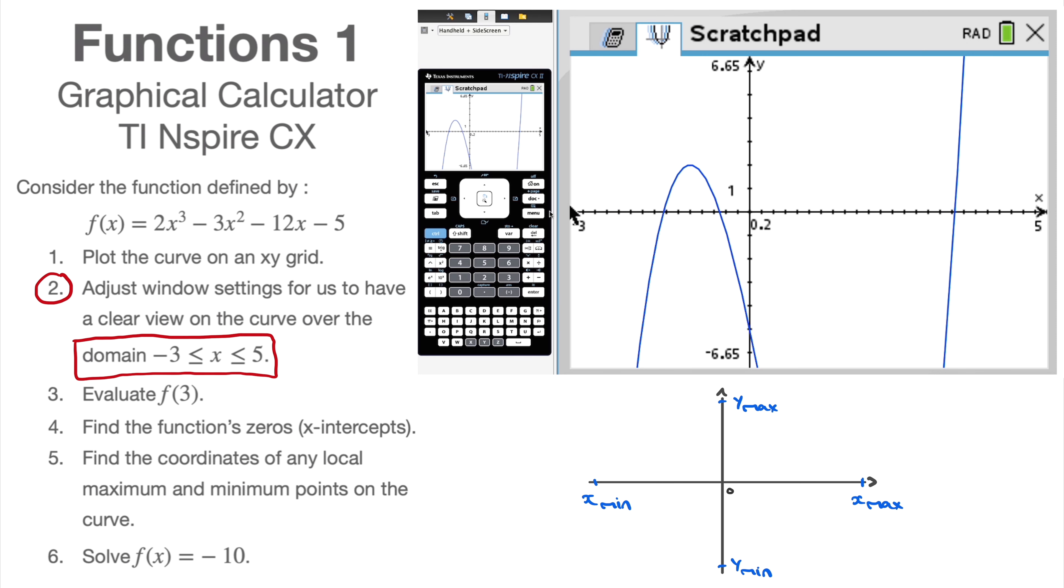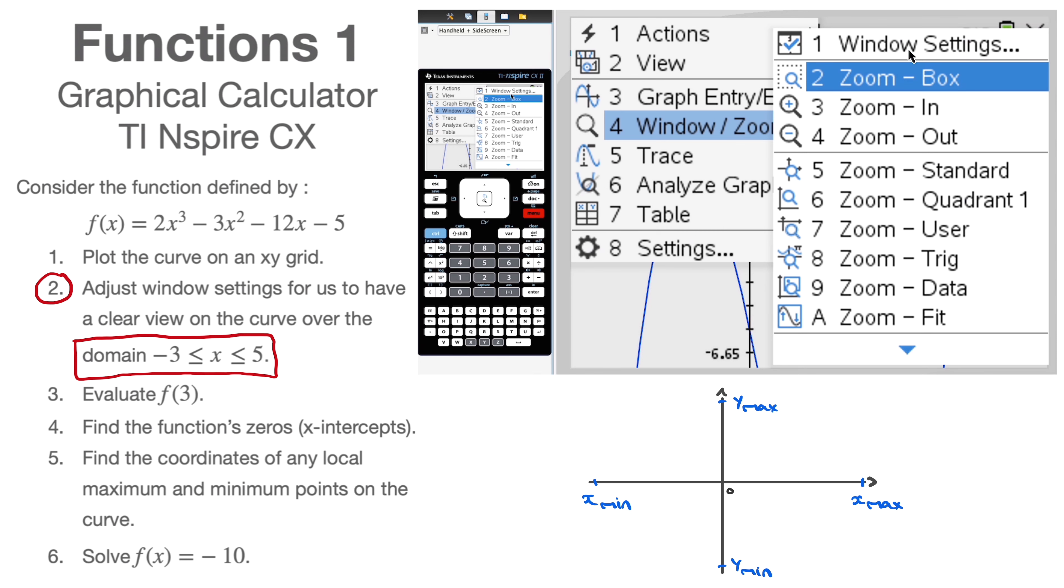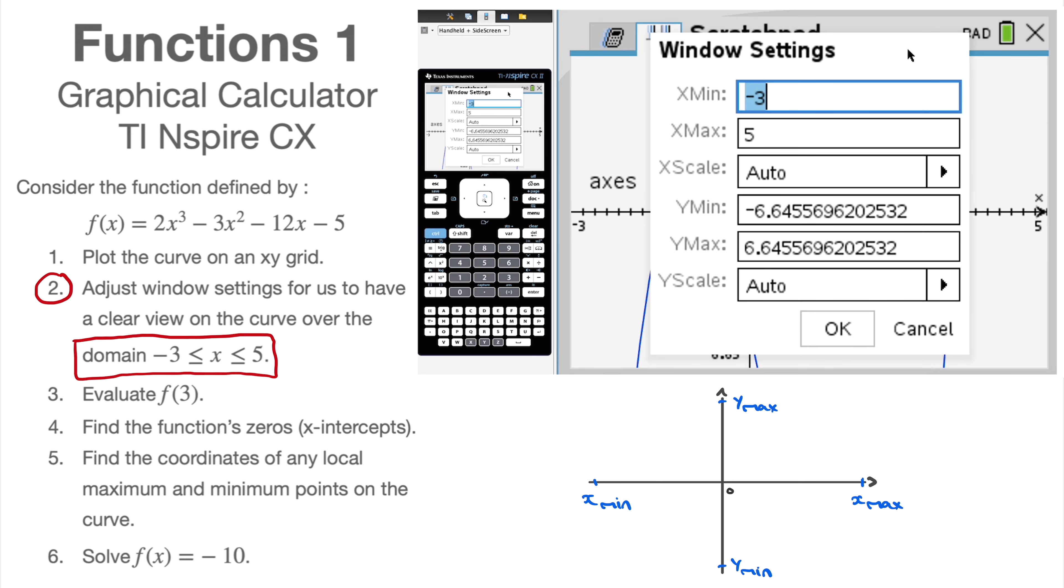So I just go ahead and take the initiative of going, OK, I'll click on menu again, window/zoom again, window settings again. And this time, I'm going to change my y values. My x values are fine now. Don't touch those. My minimum y value, I'll go ahead and say -50. For my max y value, I'll say 10. I click on OK.